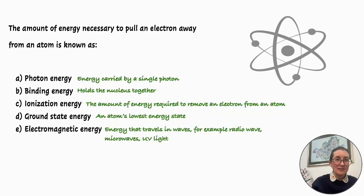The amount of energy necessary to pull an electron away from an atom is known as: A: Photon energy, B: Binding energy, C: Ionization energy, D: Ground state energy, or E: Electromagnetic energy.